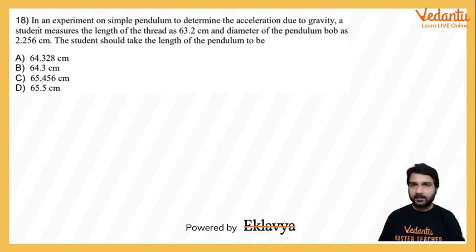In an experiment on simple pendulum to determine the acceleration due to gravity, a student measured the length of thread as 63.2 centimeters, diameter of pendulum bob as 2.256 centimeters. The student should take the length of pendulum to be...